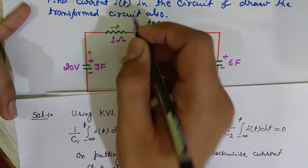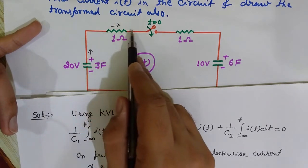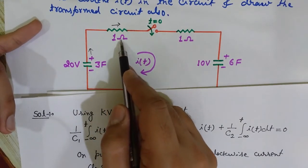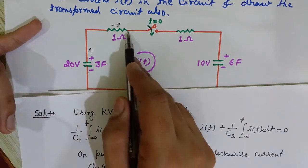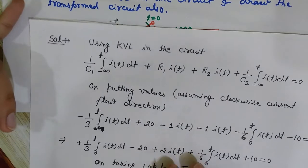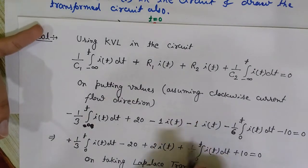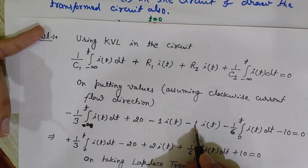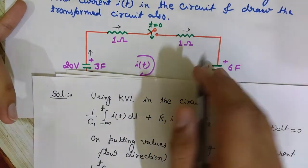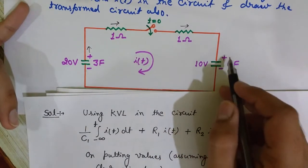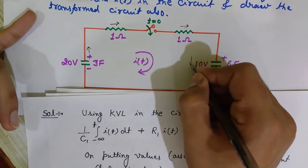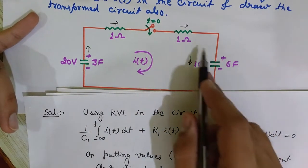For the resistors: since current flows from higher to lower potential, the voltage drop is final minus initial, which is negative. So each resistor contributes minus R×I(t), giving minus 1×I(t) for each. For the second capacitor C2, current is again flowing from higher to lower potential, so it is minus (1/6) × integral from 0 to t of I(t) dt.